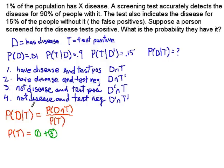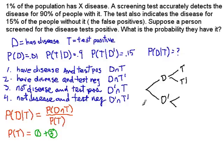The definition of a conditional probability — the probability that a person who tests positive actually has the disease — can be calculated in this way. We saw that we can evaluate these parts by making a decision tree, looking at whether the person had the disease or did not have the disease, and then whether or not they tested positive or negative. The numerator is going to be the probability that a person has the disease times the conditional probability that they test positive given they have the disease.